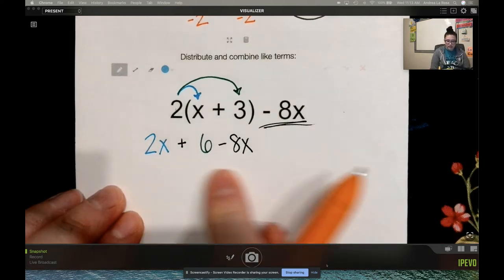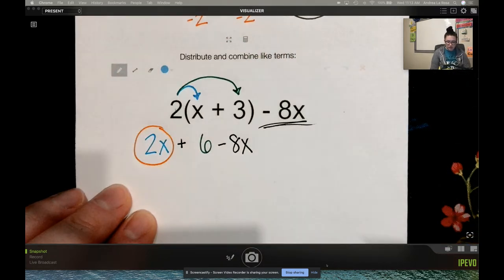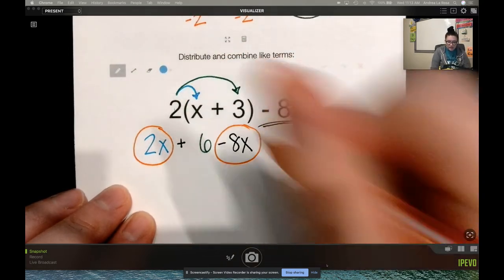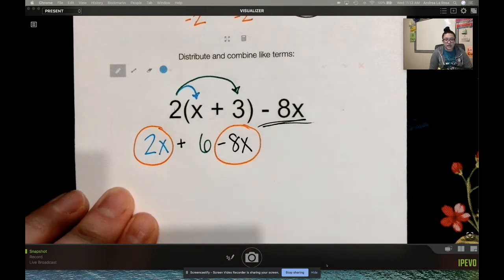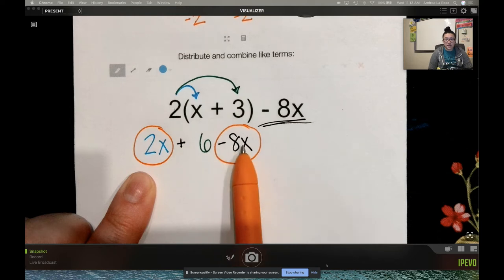So I see in here, I have 2 sets of x's. I have a 2x, and I have a minus 8x. You need to keep that negative, or that subtraction sign with that 8x.